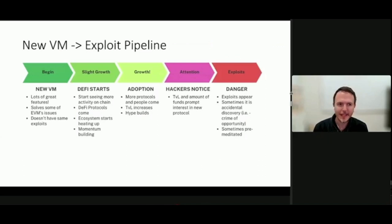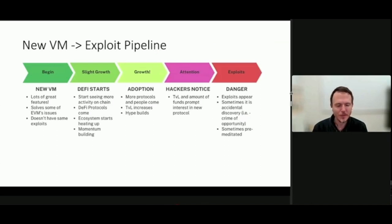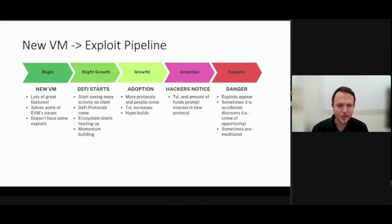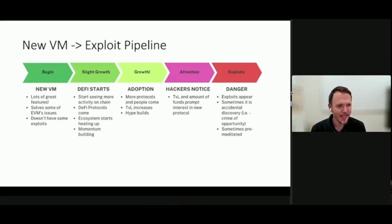You start to get more attention from hackers and you start to see exploits. Before researching exploits, I didn't realize there was a second class of exploits apart from targeted ones. Sometimes it's accidental — someone might stake into a protocol, do something by accident, realize they get more money back, and then just try to repeat that. Then people copy what they're doing, and it becomes the problem that drains the smart contract.